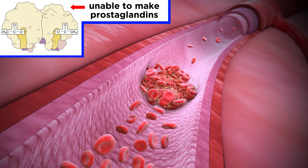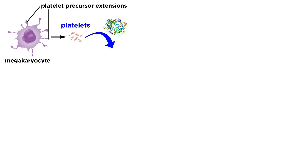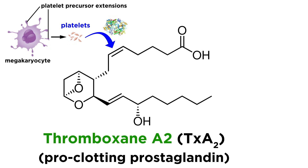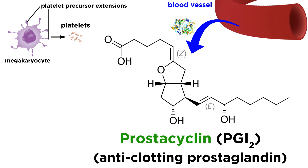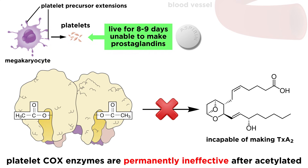The irreversible inhibition of COX enzymes by aspirin makes it effective in very low doses to prevent blood clotting. Prostaglandins produced in blood platelets and the epithelial cells lining our blood vessels are important for blood clotting activity. Cyclooxygenase enzymes in blood platelets generate the pro-clotting prostaglandin TXA2, whereas the cells in our vessels generate the anti-clotting prostaglandin PGI2. Importantly, platelets lack a nucleus, and therefore have no capacity to generate new RNA transcripts for protein production, so when their COX enzymes are inhibited by aspirin, they are prevented from generating pro-clotting prostaglandins for the lifetime of that platelet, which is usually 8 to 9 days.